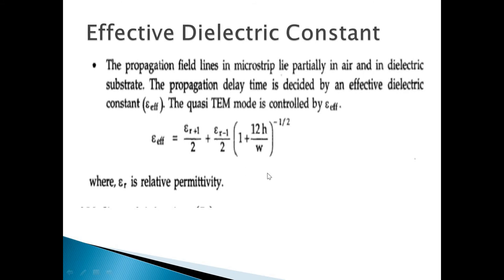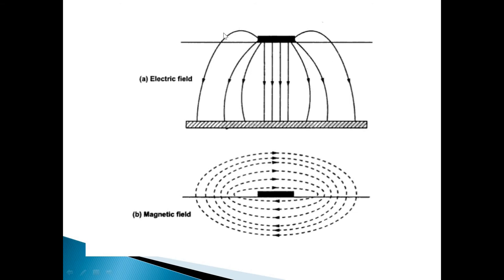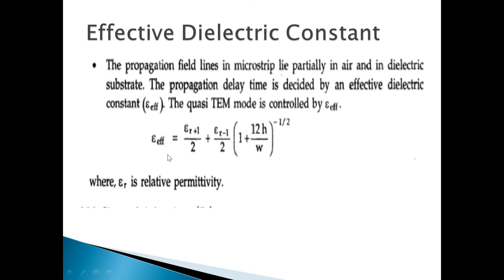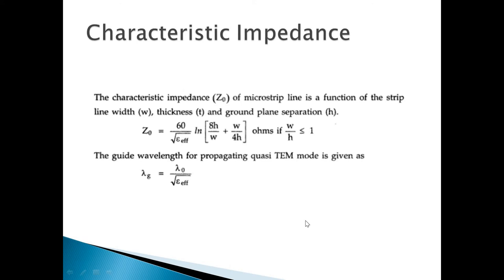The quasi-TEM mode is controlled by the effective dielectric constant. The formula for effective dielectric constant is: εeff = (εr + 1)/2 + (εr − 1)/2 · (1 + 12h/w)^(−1/2), where εr is relative permittivity, h is the spacing between the microstrip and ground plane, and w is the strip width. The characteristic impedance for w/h ≤ 1 is: Z₀ = (60 / √εeff) · ln(8h/w + w/4h). The guide wavelength is λ₀ / √εeff.